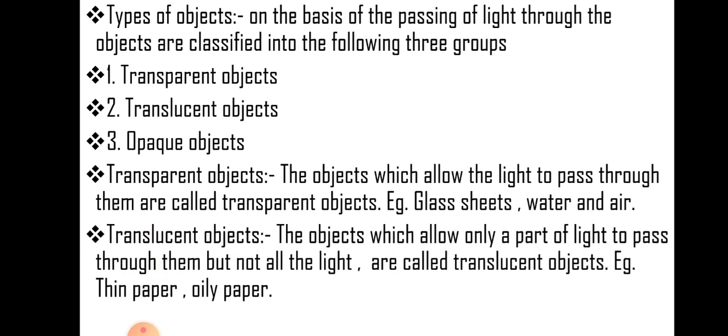Translucent object: the object which allows only a part of light to pass through them but not all the light are called translucent objects. For example, the tinted paper or the oily butter paper or butter paper.